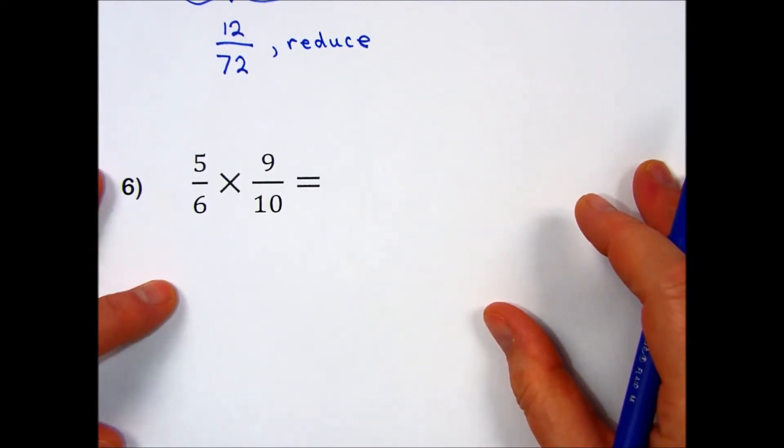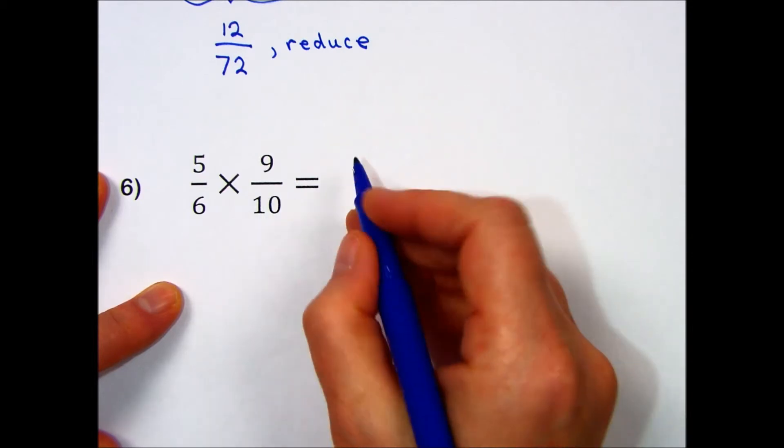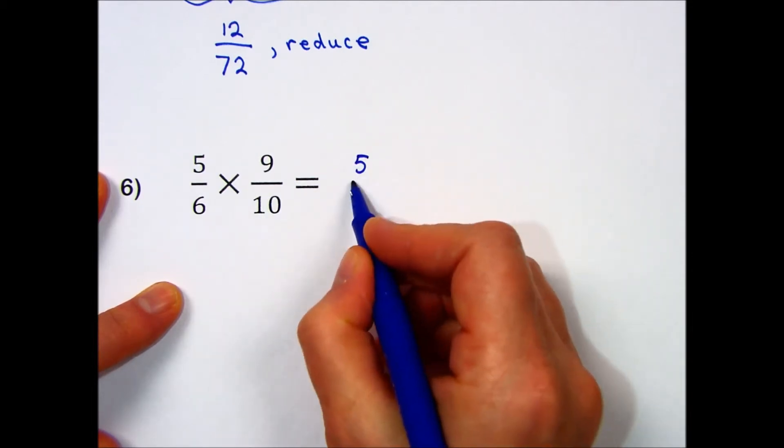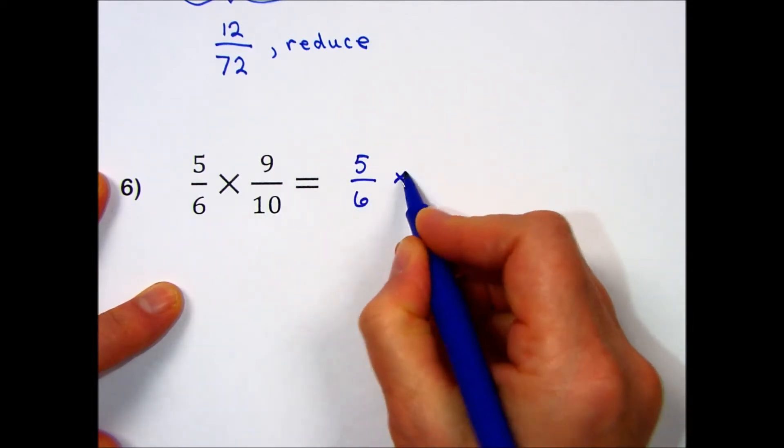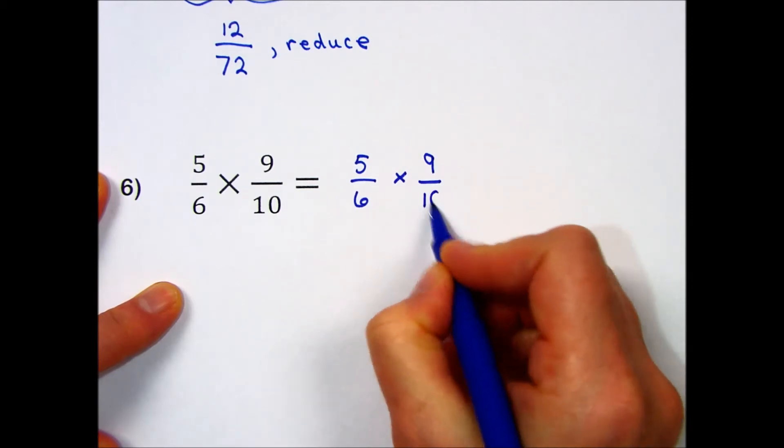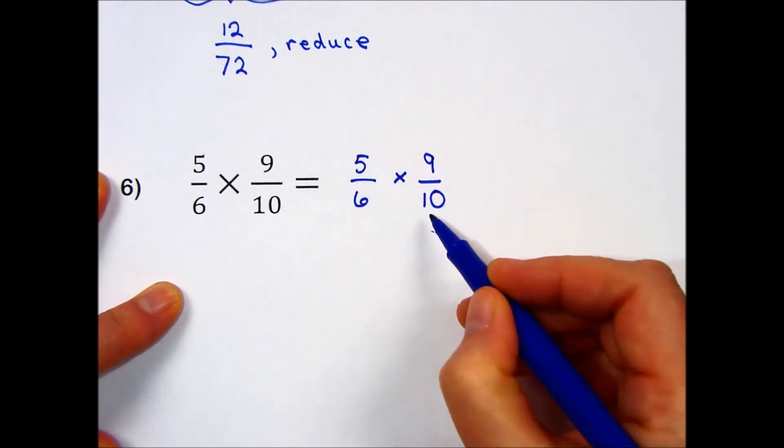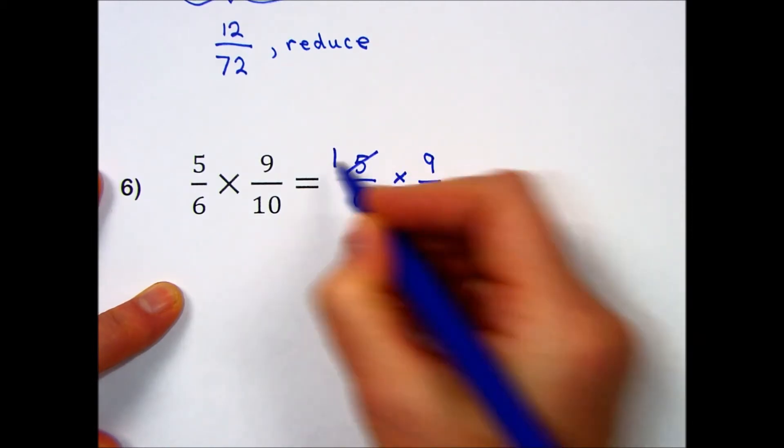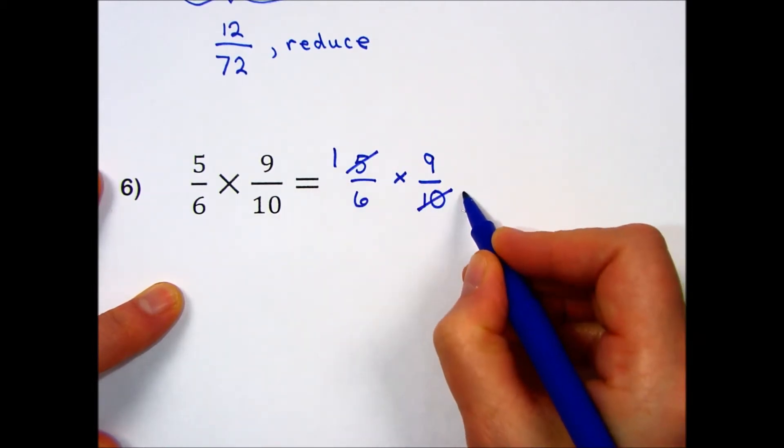Number 6. 5 sixths times 9 tenths. I'm going to rewrite this so I have room to write on it. On this diagonal, they're both divisible by 5. 5 divided by 5 is 1. 10 divided by 5 is 2.